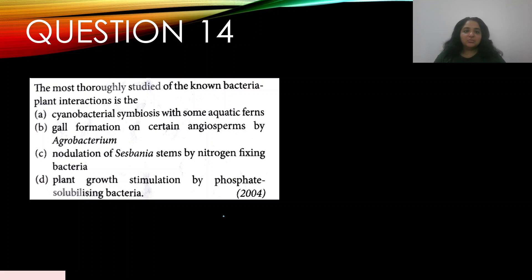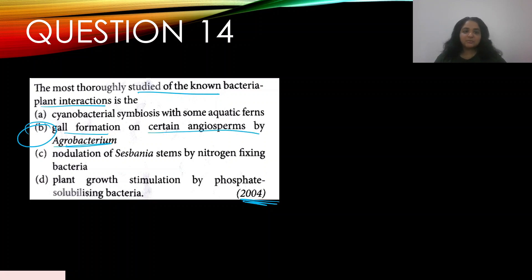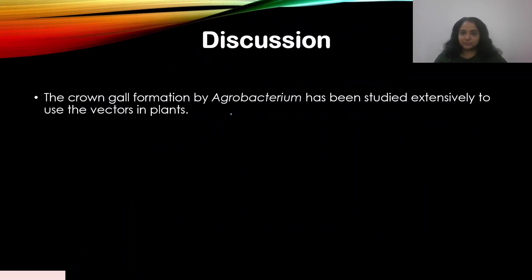Question 14: The most thoroughly studied bacteria-plant interaction — this appeared in 2004. Options: A — cyanobacterial symbiosis with aquatic ferns, B — gall formation in certain angiosperms by Agrobacterium, C — nodulation of Sesbania stems by nitrogen-fixing bacteria, D — plant growth stimulation by phosphate-solubilizing bacteria. The answer is B — gall formation in certain angiosperms by Agrobacterium, since this is the most studied and still actively researched interaction relevant to genetic engineering.